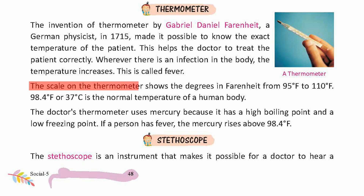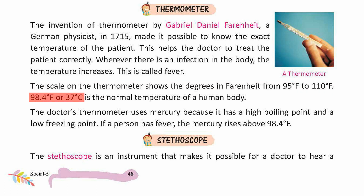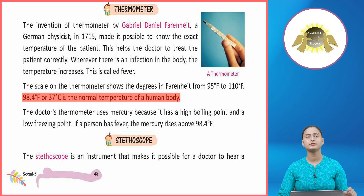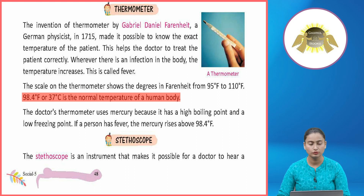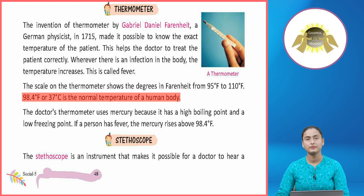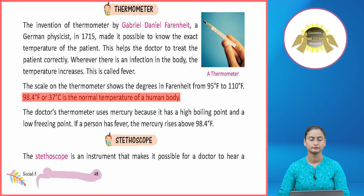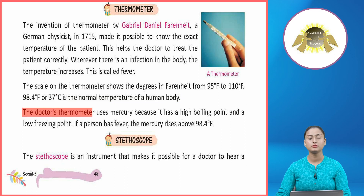The scale on the thermometer shows degrees in Fahrenheit from 95°F to 110°F. 98.4°F or 37°C is the normal temperature of a human body. The doctor's thermometer uses mercury because it has a high boiling point and a low freezing point.